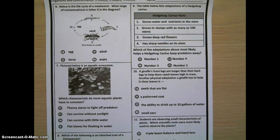Seven, picture below is an aquatic ecosystem. Which characteristic do most aquatic plants have in common? A, thorny stems to fight off predators. B, can survive without sunlight.